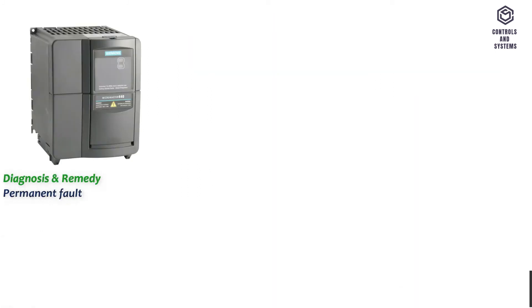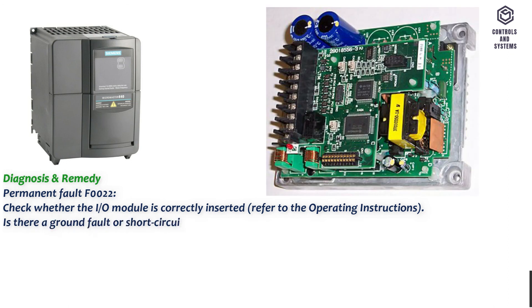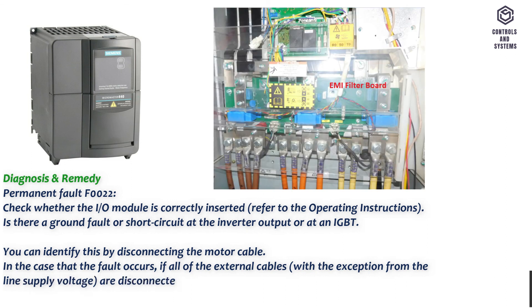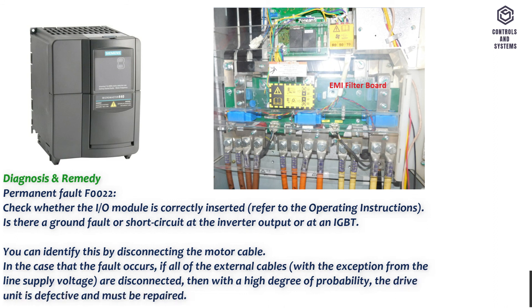Permanent fault F0022: Check whether the IO module is correctly inserted, refer to the operating instructions. Is there a ground fault or short circuit at the inverter output or at an IGBT? You can identify this by disconnecting the motor cable. In the case that the fault occurs if all of the external cables, with the exception of the line supply voltage, are disconnected, then with a high degree of probability the drive unit is defective and must be repaired.